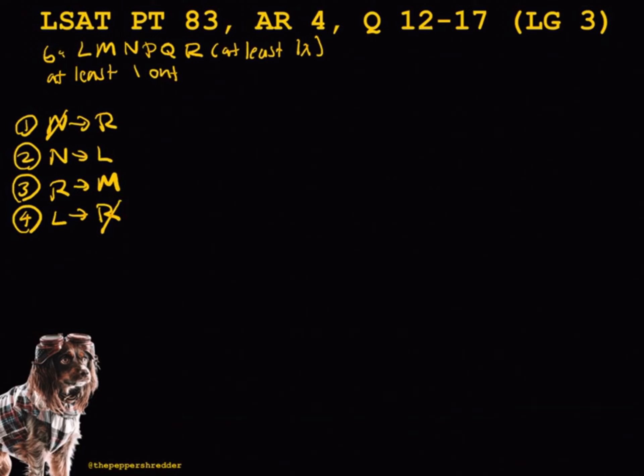Now let's draw a diagram and make deductions. First, let's draw a circle around P and Q to indicate that they are variables because they are not mentioned in any of the rules. Next, let's note the contrapositive statements of each rule. If R is out, N must be in. If L is out, N must be out. If M is out, R must be out. If R is in, L must be out.